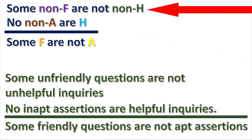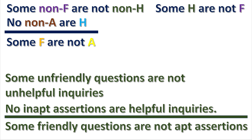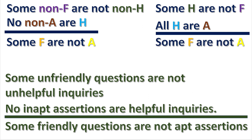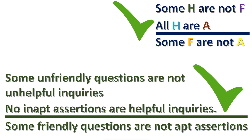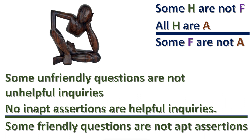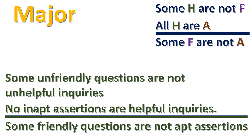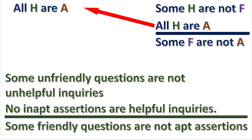Since the first premise is an O proposition, we can contrapose it. The second premise is an E proposition — we can first convert it and then obvert it. And presto! We now have a syllogism that is logically equivalent to the original syllogism, but now it only has three terms. To finish putting it into standard form, the major premise goes first, followed by the minor premise, so we switch the order of the premises.